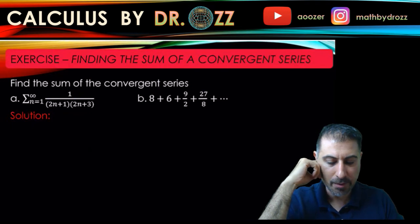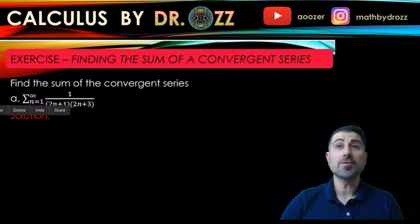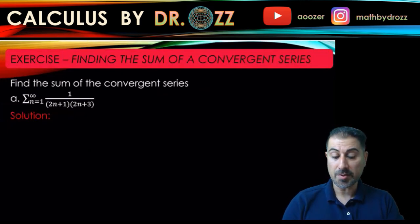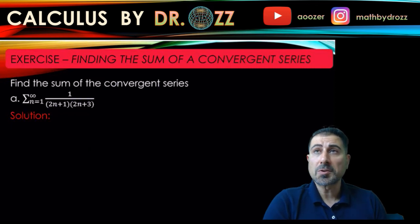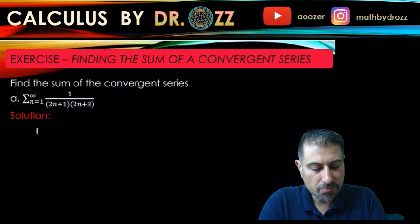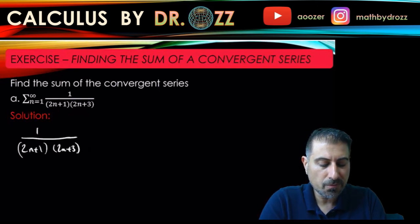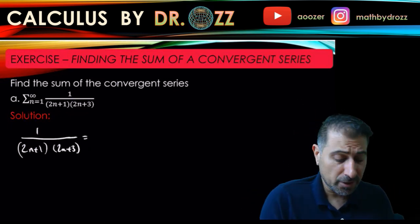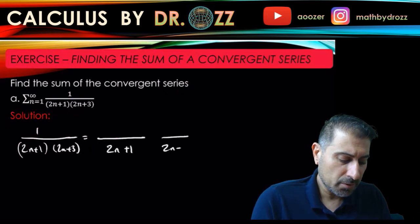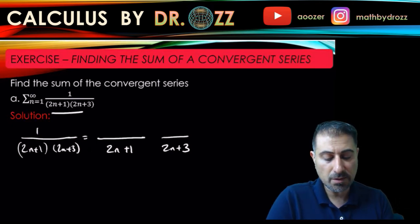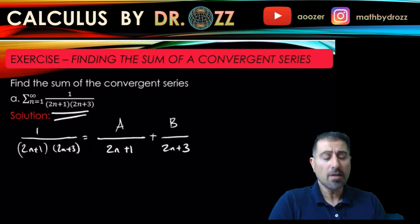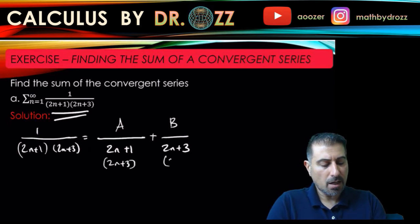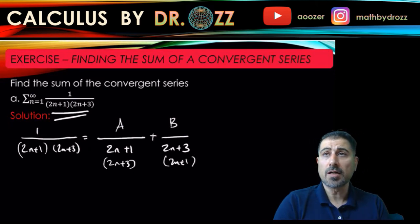Let's start with Part A, which is a telescoping series. The expression is given as a fraction where the denominator is a product of two terms. We're going to use partial fractions to split this fraction into smaller fractions. We rewrite the nth term and apply partial fraction rules, so the denominators will be 2n+1 and 2n+3 since the expression is already in factored form. We place constants A and B in the numerators.